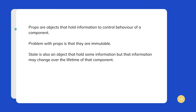We already know from the previous example that props are immutable. Props are objects that hold information to control the behavior of a component — they get passed to a function and contain information which influences the component's behavior. The problem with props is that their values cannot be changed inside a component. But what if you want an object that holds information influencing a component's behavior and can also be changed dynamically inside the component?